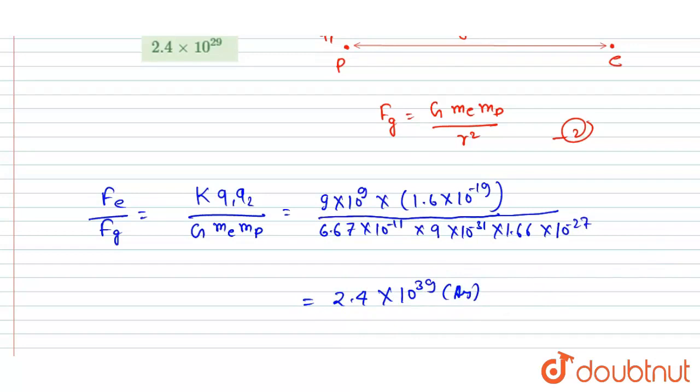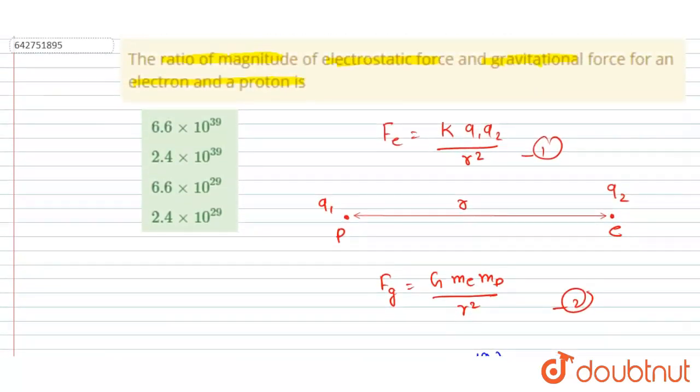Now you could mark the correct option. B will be the correct option, 2.4 × 10³⁹. Thank you.